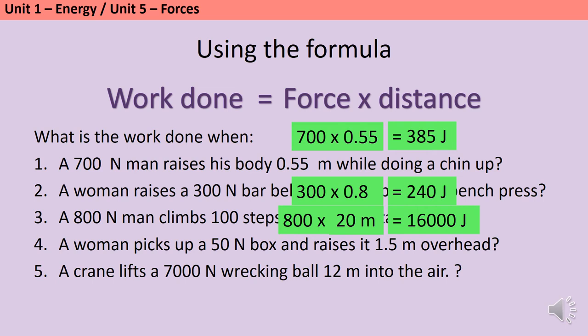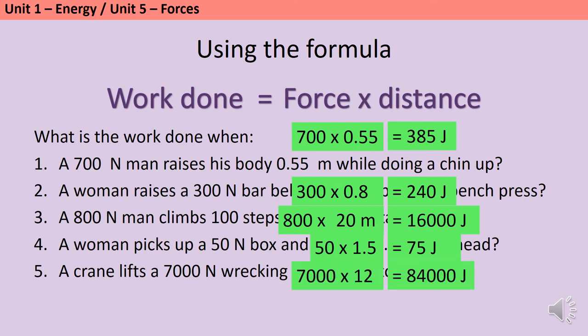And then question four, we're back to the same format that we had before, so this 50 newton box multiplied by 1.5 meters overhead is 75 joules, and finally the wrecking ball multiplied by 12 meters is 84,000 joules.